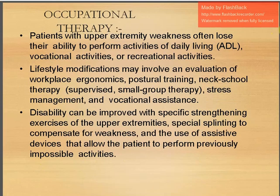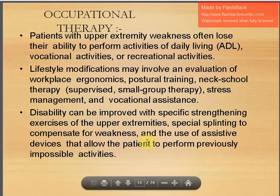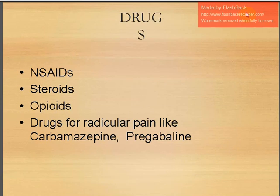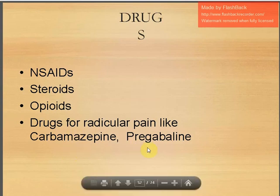Occupational therapy is important for patients with upper extremity weakness who lose the ability to perform activities of daily living, vocational, or recreational activities. Lifestyle modifications include evaluation of workplace ergonomics, postural training, neck school therapy, stress management, and vocational assistance. Specific strengthening exercises, special splinting, and assistive devices can improve disability. Drugs used include NSAIDs, sometimes steroids, opioids, and drugs for radicular pain like carbamazepine and pregabalin.